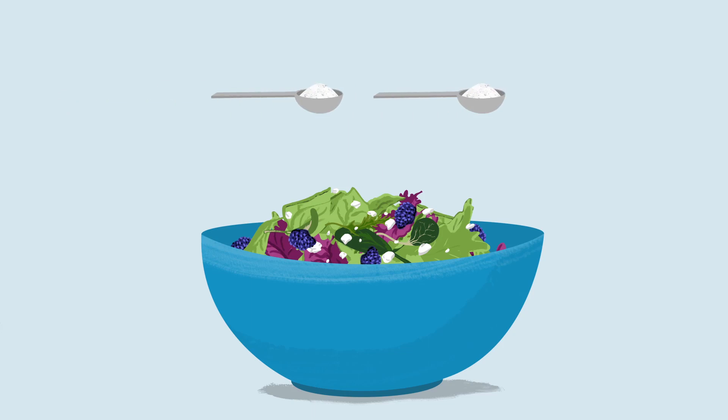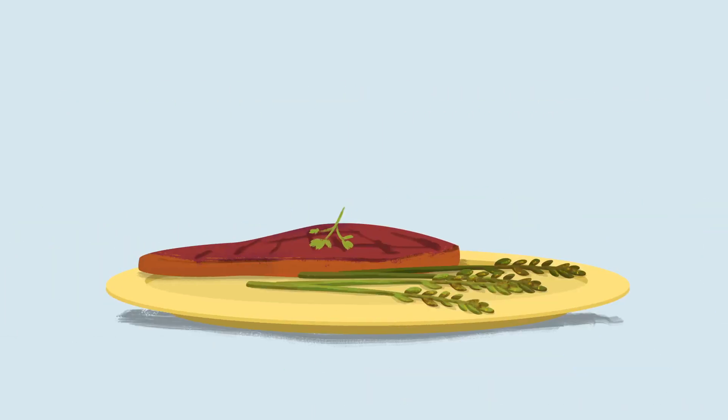For example, a blackberry spinach salad with goat cheese medallions. Just 2 teaspoons of hidden sugars. Spiced beef and asparagus stir fry, just 2.5 teaspoons of hidden sugars.